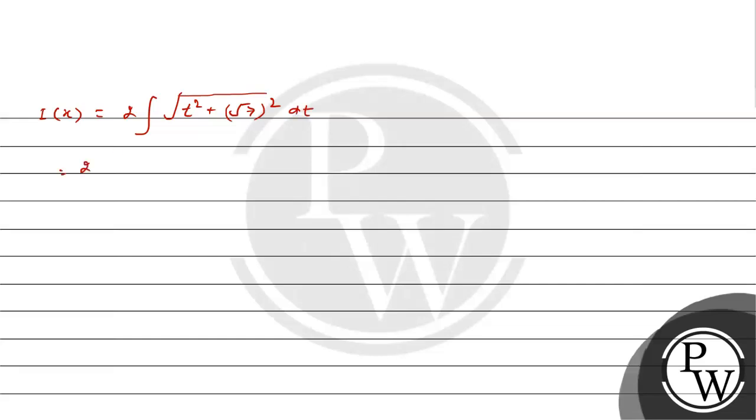This equals (t/2)√(t² + 7) plus (a²/2) ln|t + √(t² + 7)| plus C, which is (t/2)√(t² + 7) plus (7/2) ln|t + √(t² + 7)| plus C.